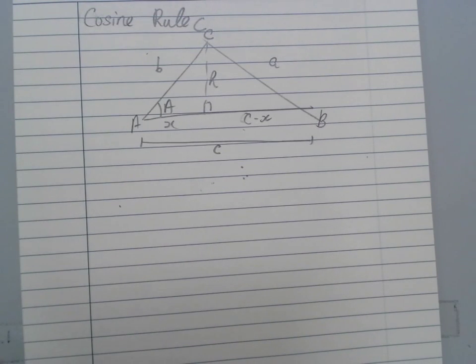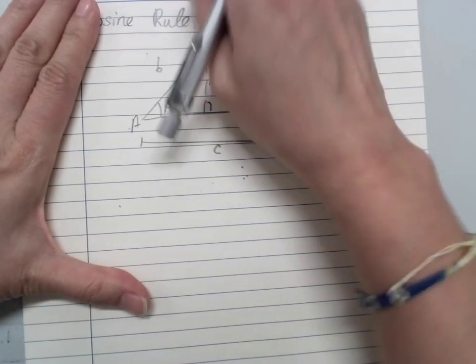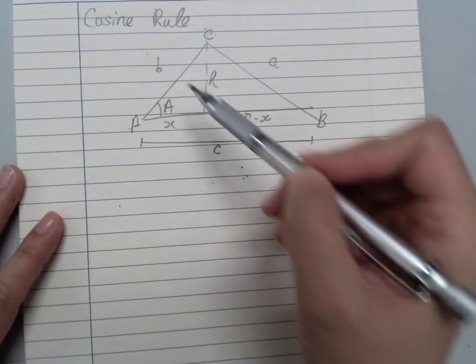All right, this is the proof of the cosine rule. I have generated a triangle ABC, and given that the opposite side of angle C is C, and always do so.